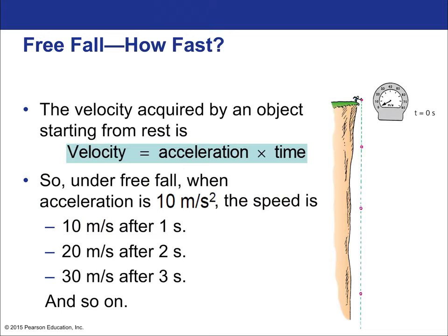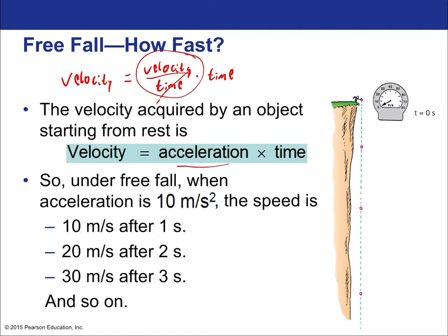The velocity acquired by an object starting from rest is: velocity equals acceleration times time. This comes directly from the definition of acceleration — acceleration equals change in velocity over time. Multiply both sides by time, and the time cancels, giving you back velocity. So if you drop an object and let it fall for a certain number of seconds at 9.8 meters per second squared, you know how fast it's going after that elapsed time.